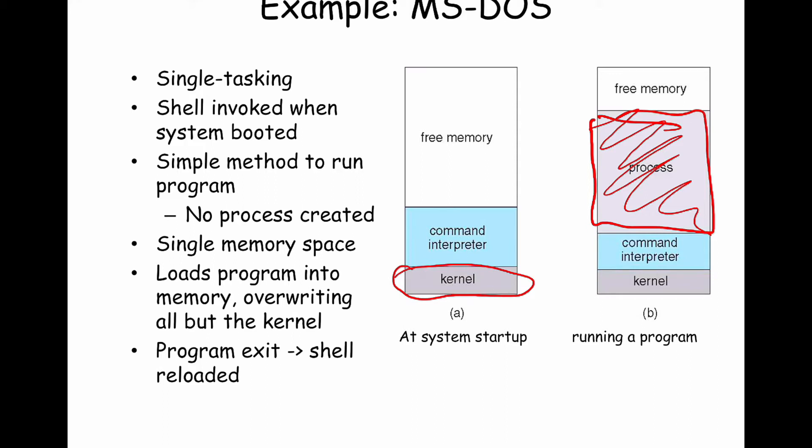The model then was: one computer running one application for most of the day, depending on your job function. An accountant ran a spreadsheet application; a news reporter ran a word processor — not graphical, just text-based. This single-tasking model fit that use case well. Multi-user Unix systems were already around at the same time for large organizations — governments, large accounting firms, universities — and those multi-user systems had multitasking, where multiple users had terminals connected to one CPU and all wanted their programs to run.